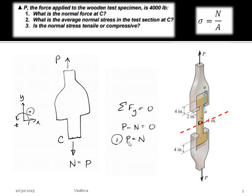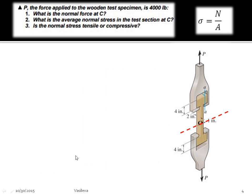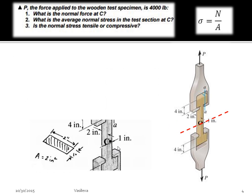So we know that since P is 4,000 pounds, N is also going to be 4,000 pounds pointing down. And then in order to find average normal stress, we know that N is going to be the 4,000 pounds, but we need to find A, and A is the area of the cross section where that force is applied, and it's basically this rectangle here, so 2 by 1 inch.